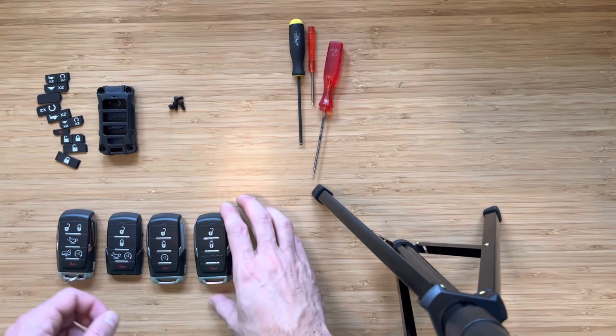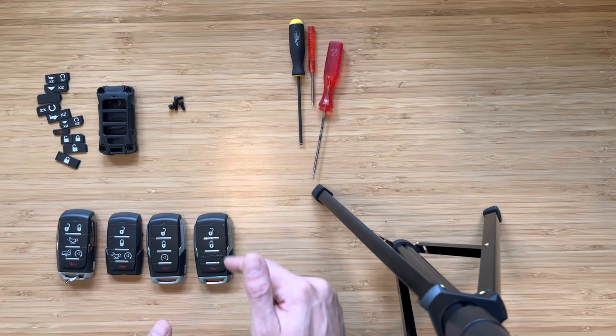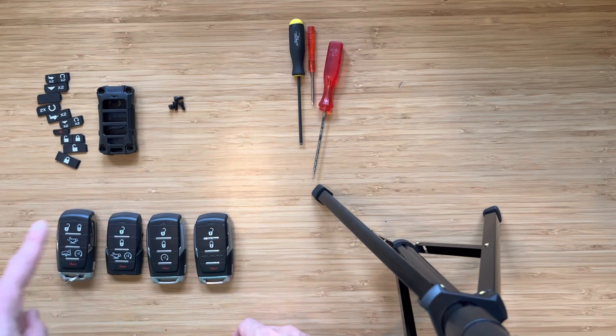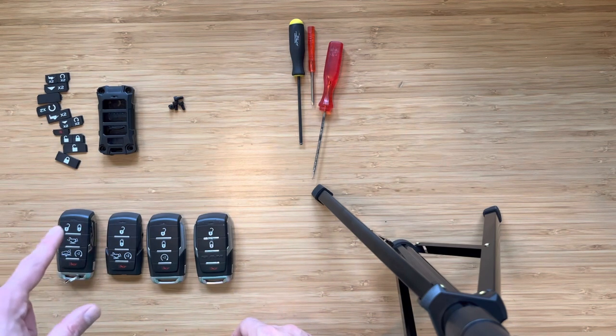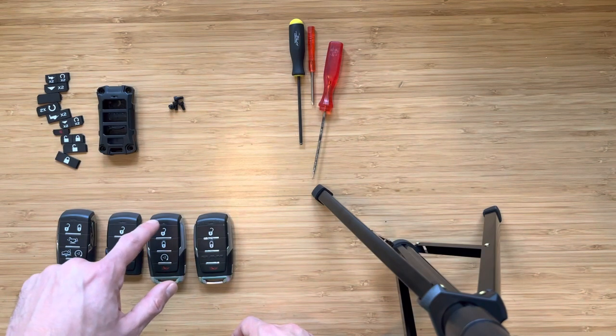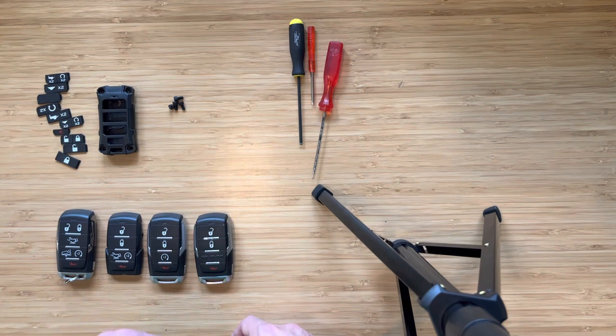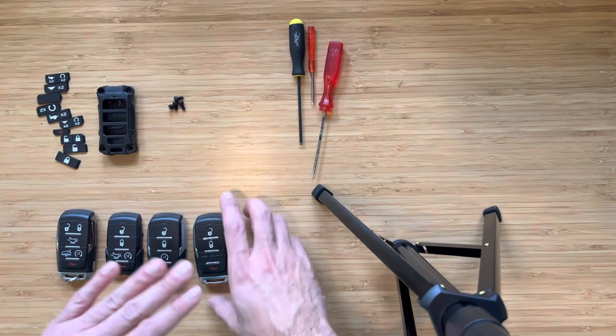As you can see, we've got everything from the simple unlock, lock, panic button all the way up to this one that has several additional features. There's also a fifth one here that's not compatible that looks sort of like this one with the unlock, lock, and then the adjustable ride height air suspension button and then the panic button there.